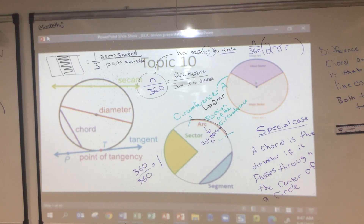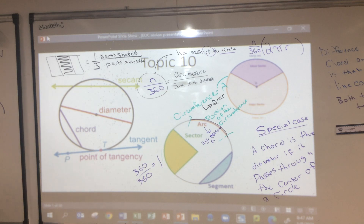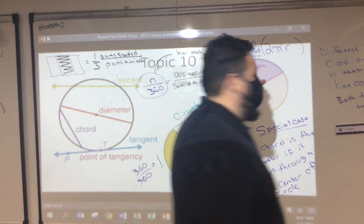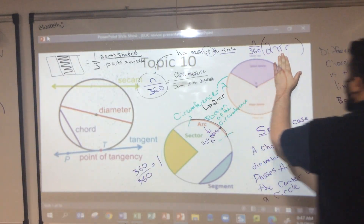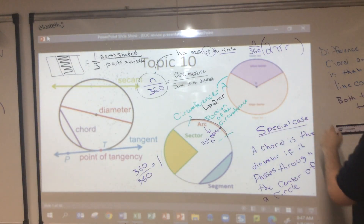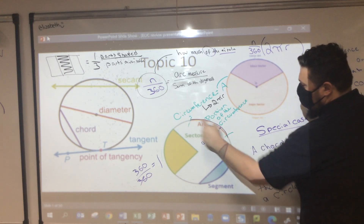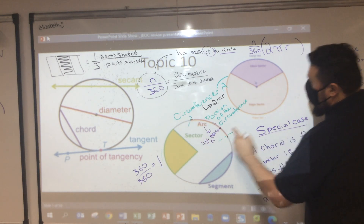This formula — n/360 times 2πr — will find the length from one green mark to the other: the arc length.